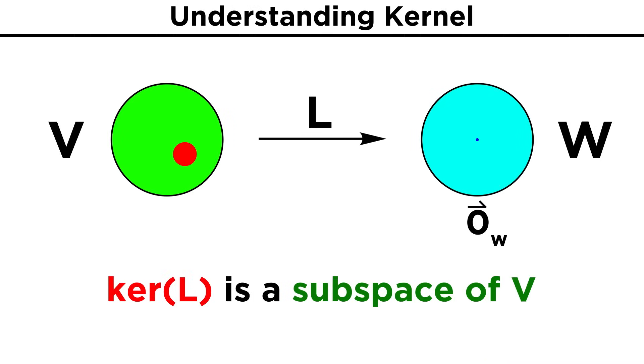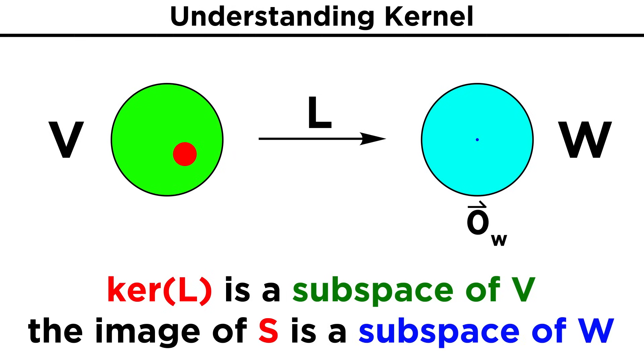Before we move on, it's worth noting that the kernel of L is a subspace of V, and for any subspace S of V, the image of S is a subspace of W. So any vectors from a kernel or image immediately follow all the properties of subspaces we already learned.